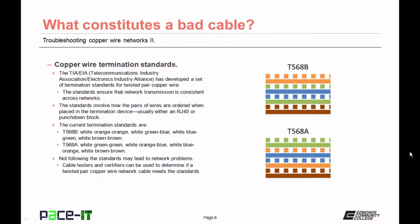Let's talk about copper wire termination standards. They are currently established by the TIA-EIA, that is the Telecommunications Industry Association Electronic Industry Alliance. They have established a set of termination standards for twisted pair copper wire. The standards ensure that network transmission is consistent across networks. The standards involve how the pairs of wires are ordered when placed in the termination device, which is usually either an RJ45 or a punchdown block.